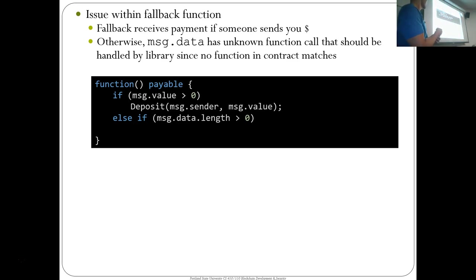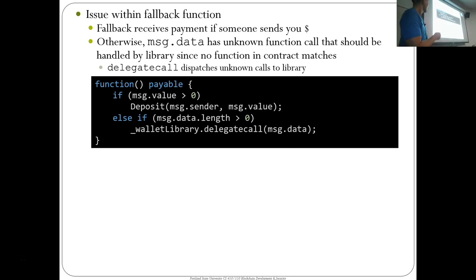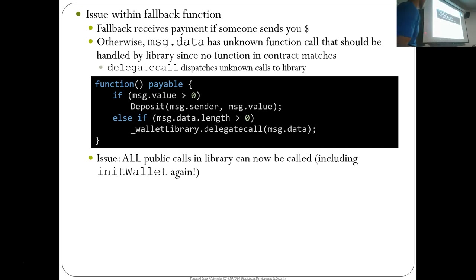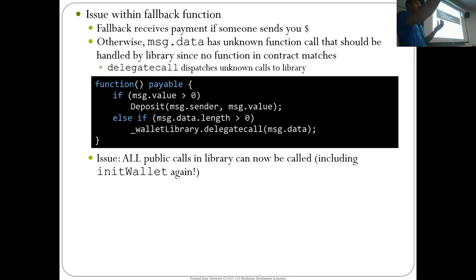This is what most of these wallets were doing: if money came into the wallet, it would deposit it. If a call had a function signature it did not recognize, it assumed it was a delegate call to the library. So it would take the message data — the four bytes of the hash given in message.data — and forward it to the wallet library. The problem with this delegate call solution is that every single public function in the wallet library is now callable through this fallback function. If the wallet included that library, it exposed all the library's public function calls to any adversary.